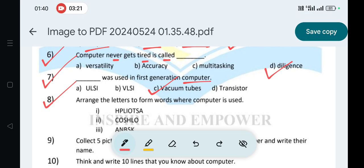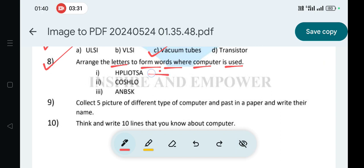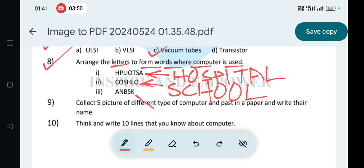Arrange the letters to form words where computer is used. Hospital - H F P L O T S A. School - C O S H L O. Bank - A N B S K.